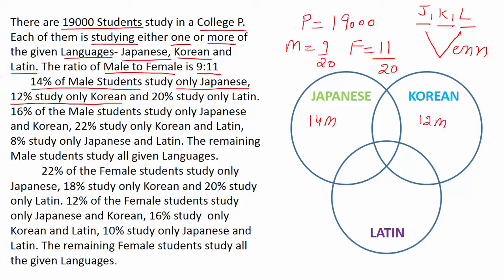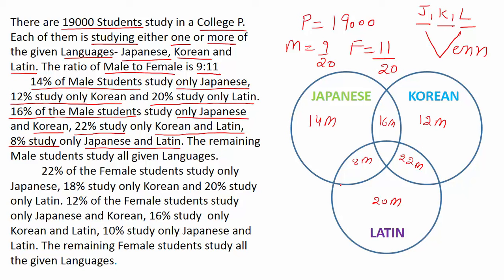12% of male students study only Korean, and 20% study only Latin, so we write 20M in only Latin. Next point: 16% of male students study only Japanese and Korean, so we write 16M in only Japanese and Korean. 22% study only Korean and Latin, so we write 22M in only Korean and Latin. 8% study only Japanese and Latin, so we write 8M in only Japanese and Latin.